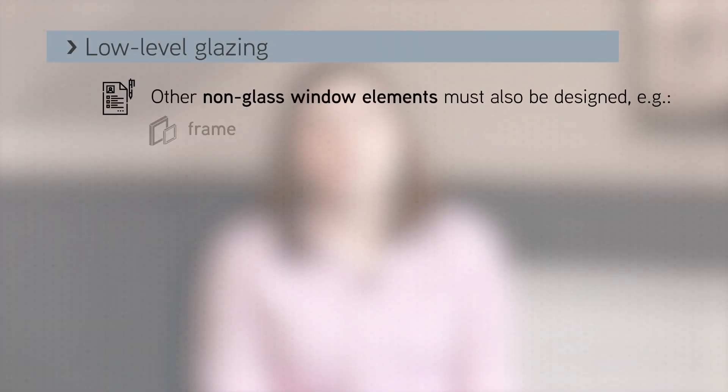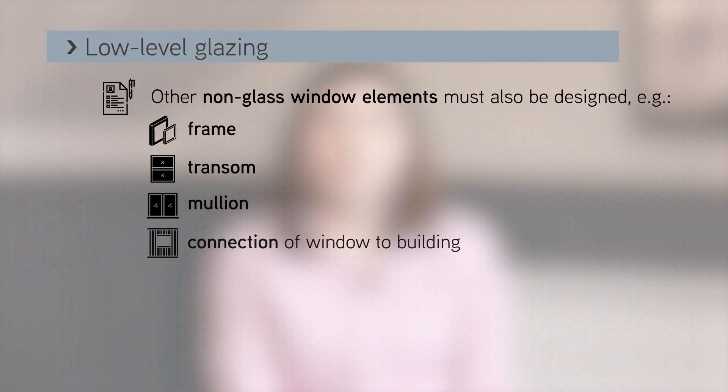As well as the glass, other elements of the window need to be designed, such as the frame, transom and mullion, and the connection of the window to the building.